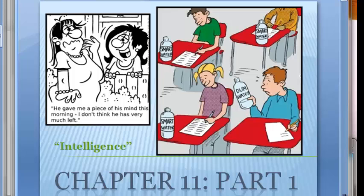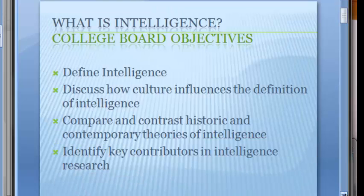One of our summer assignments was to read chapter 11, which deals with intelligence. We're going to break it down into three parts. Today our video is going to look at defining intelligence and the different theories of intelligence. The College Board objectives are listed here — defining intelligence, thinking about how culture might influence the definition, and comparing and contrasting the different theories and identifying key contributors.